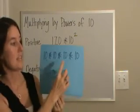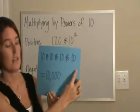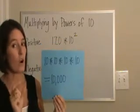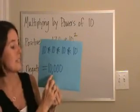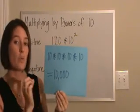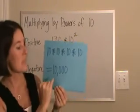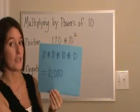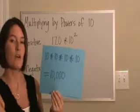10 times 10 times 10 times 10 is 10,000. Notice that the exponent 4 matches up with how many zeros we have in our answer. If we were starting with the number 1, it would be the same thing as moving the decimal 4 times to the right. You could think of positive as always right.